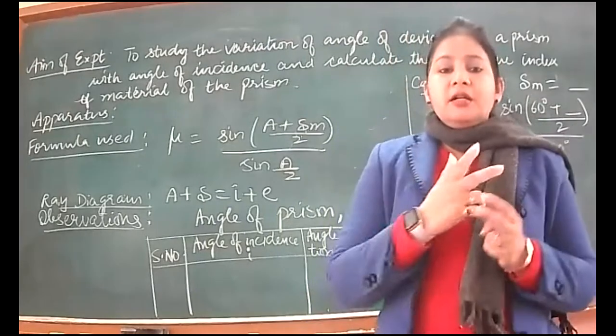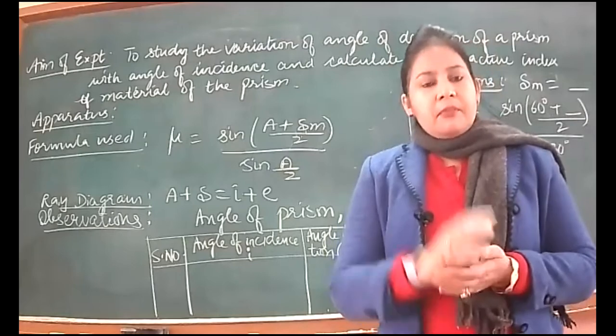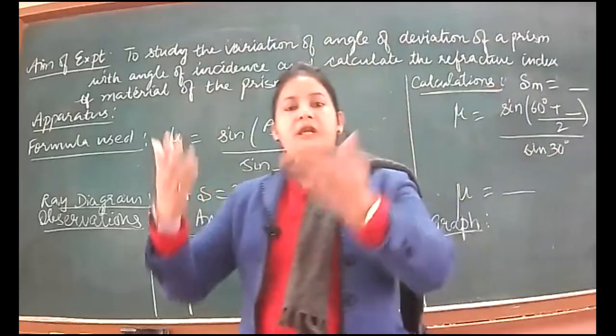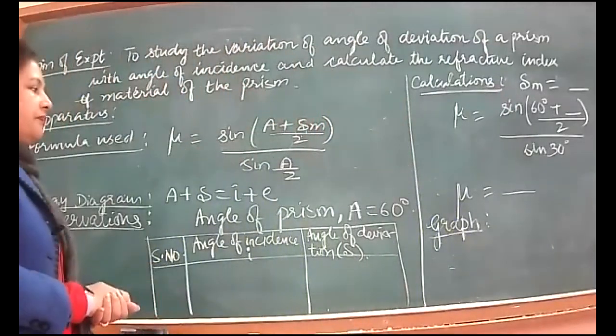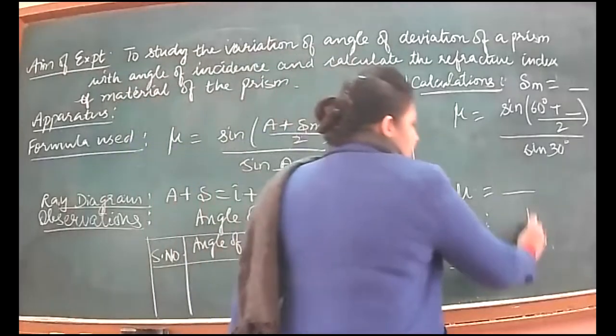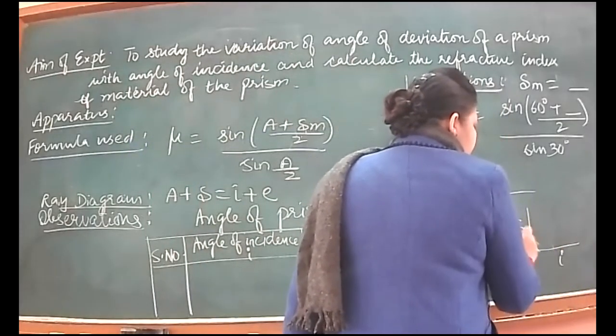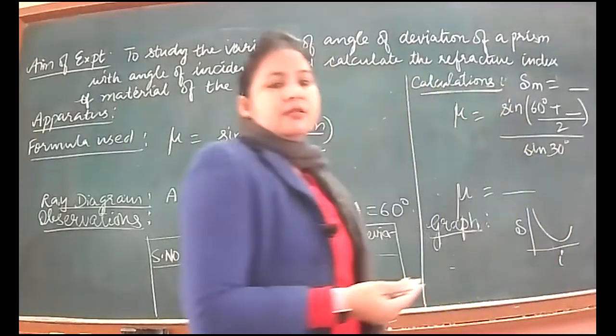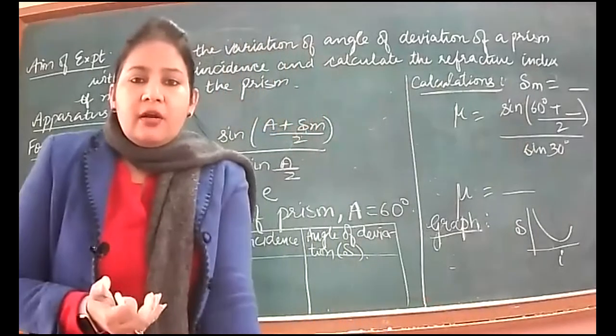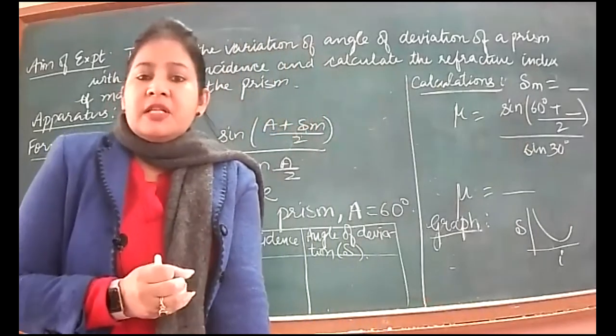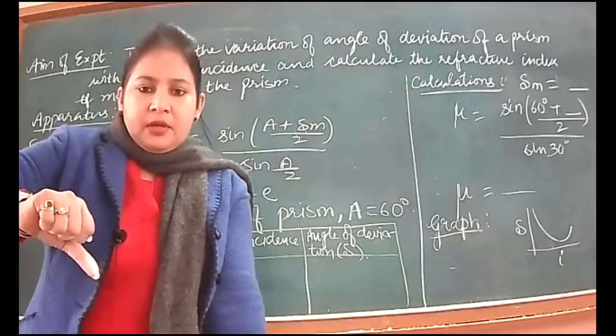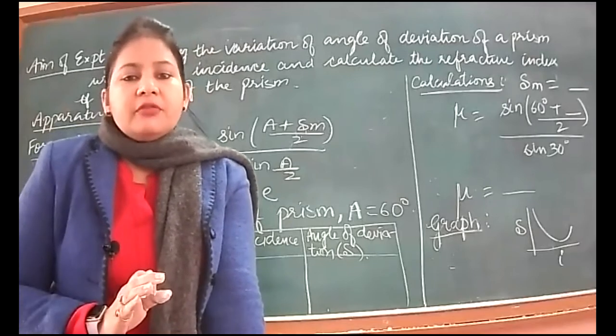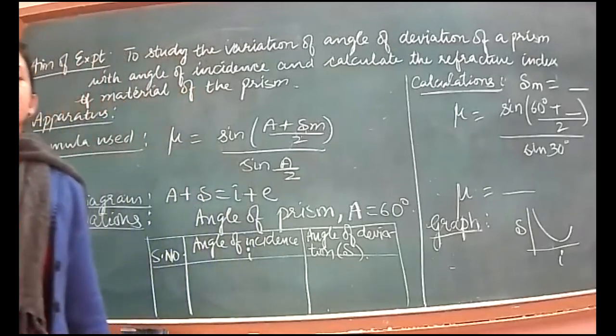After the graph, which will be a curve between I and delta, it will start decreasing first then start increasing. As we go on increasing the angle of incidence, we will see that the angle of deviation goes on decreasing.